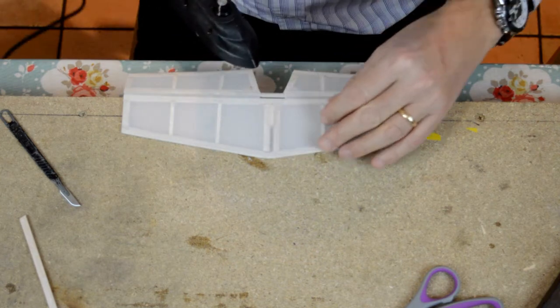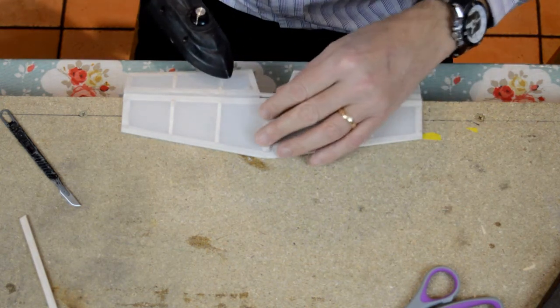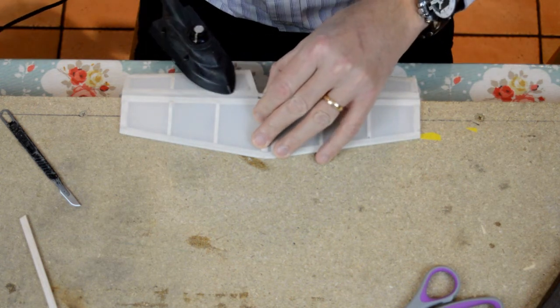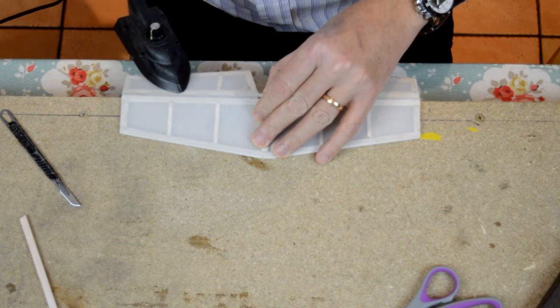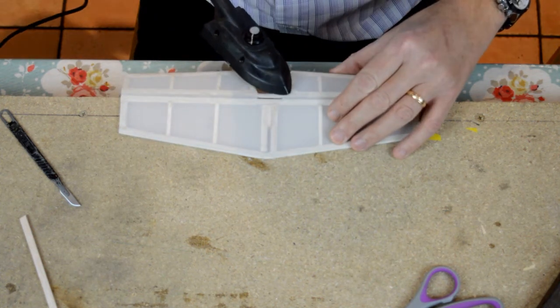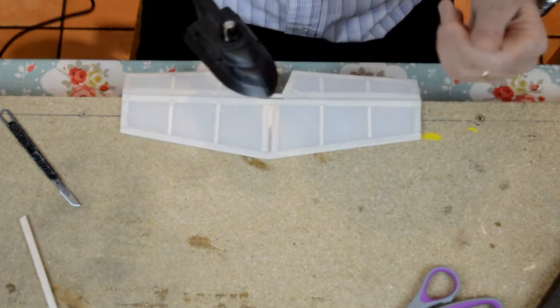I wouldn't use normal sellotape, it won't last 30 seconds because one, it'll be affected by the sunlight, and the other thing is any damp, any moisture in the air and it will just peel straight off.